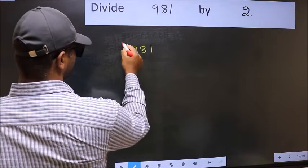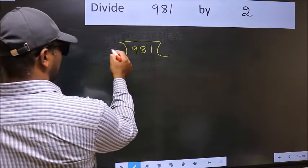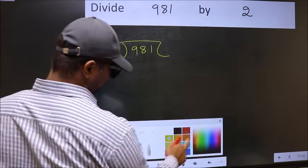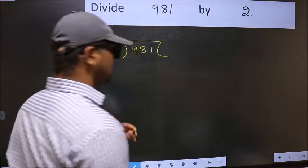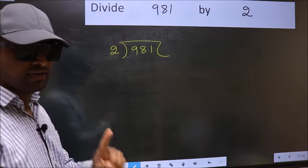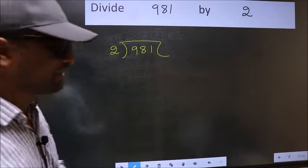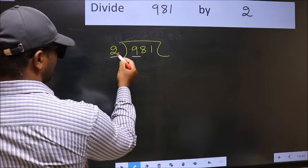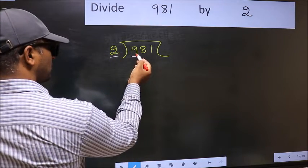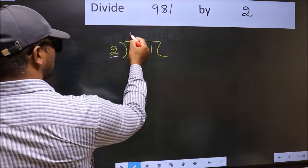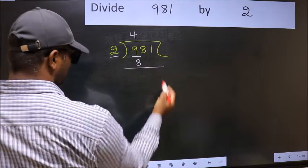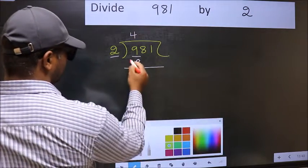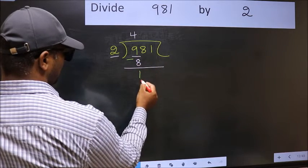981 and 2 here. This is your step 1. Next, here we have 9 and here 2. A number close to 9 in 2 table is 2 fours 8. Now you should subtract 9 minus 8, 1.